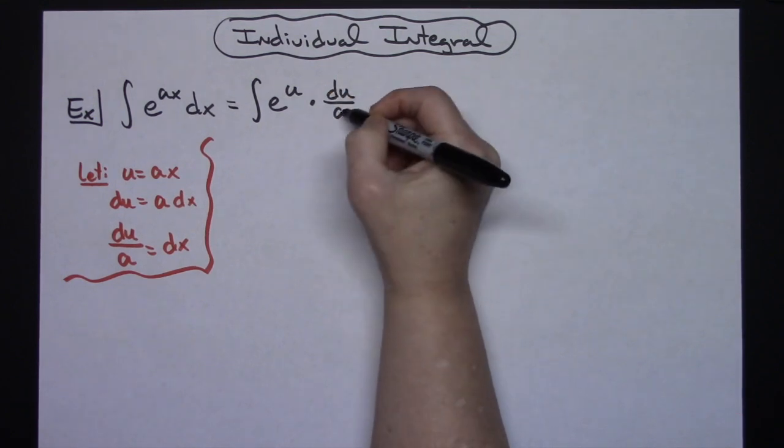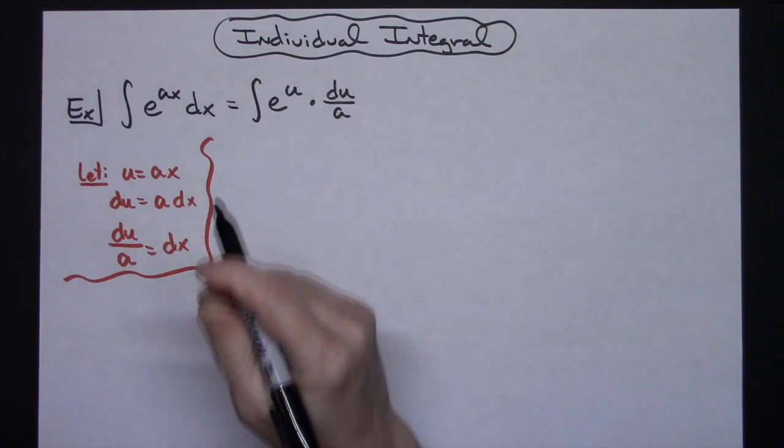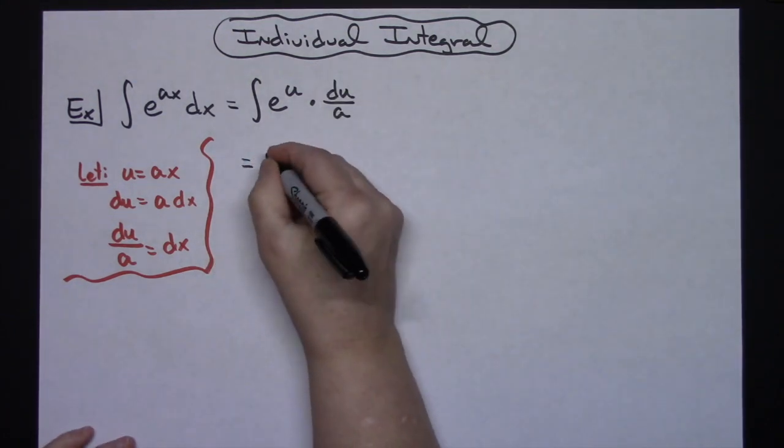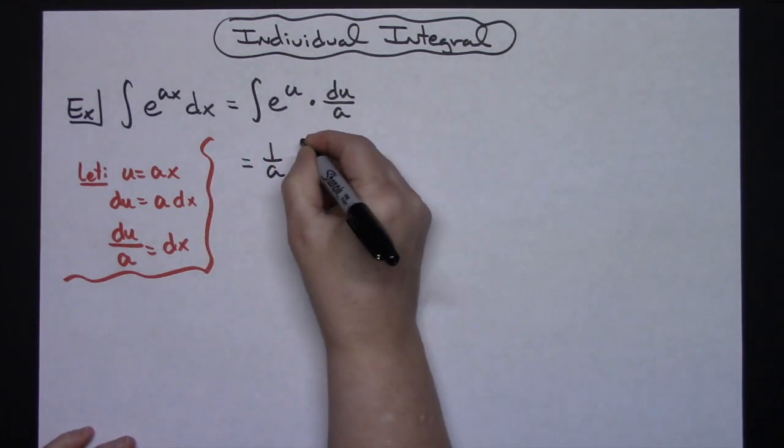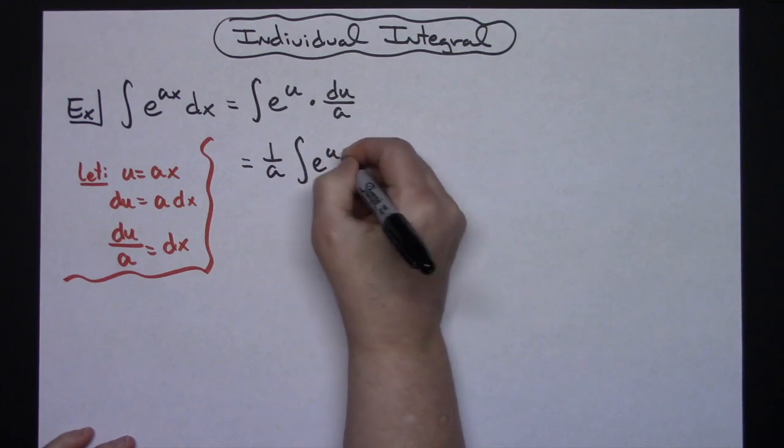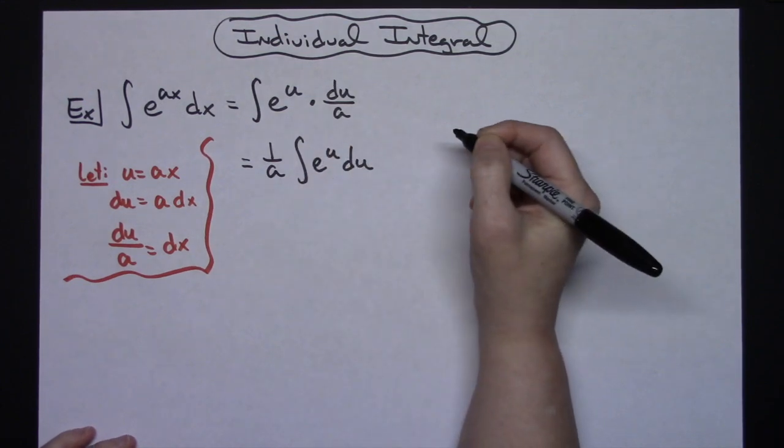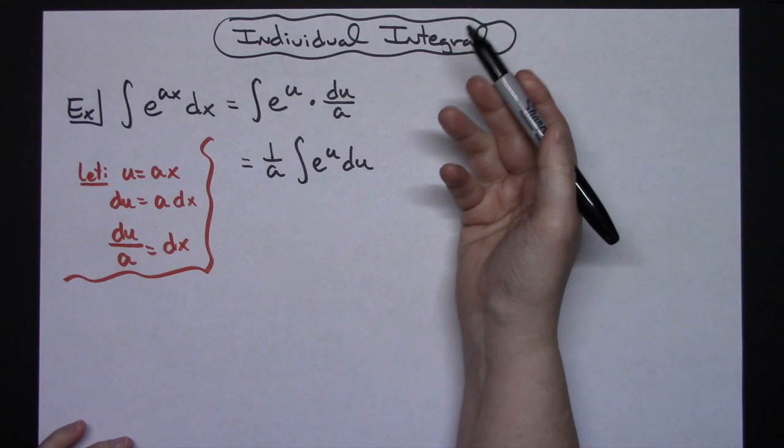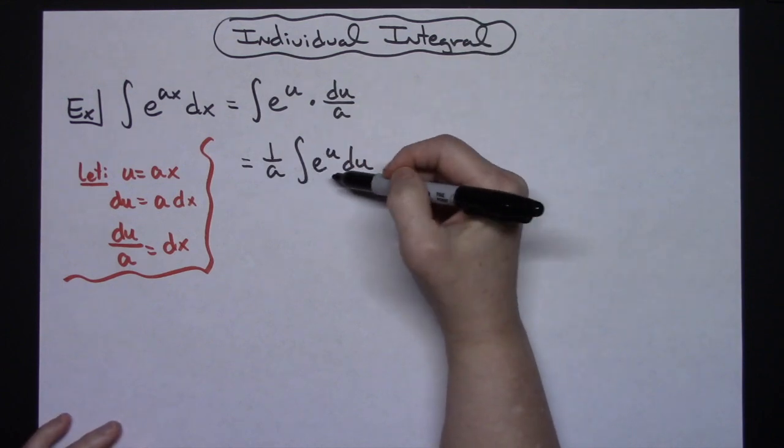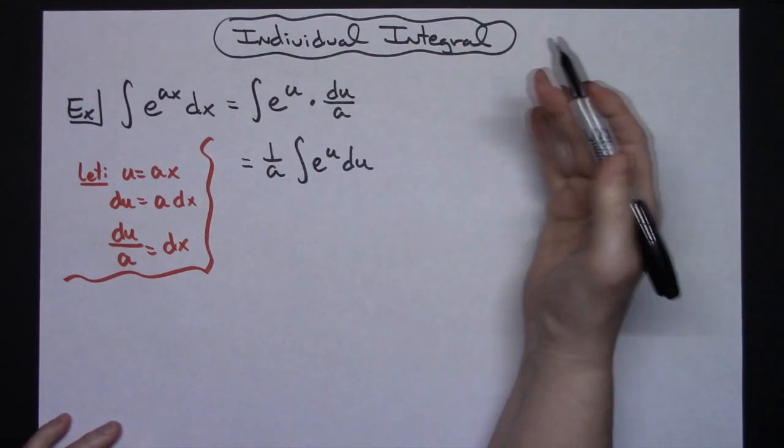Now keeping in mind that that a is a constant, I can pull a 1 over a out in front. So I'm going to have 1 over a integral of e to the u du, which is where we want to get because if you are at this point in your integration you should have memorized to integrate e to the u as e to the u.